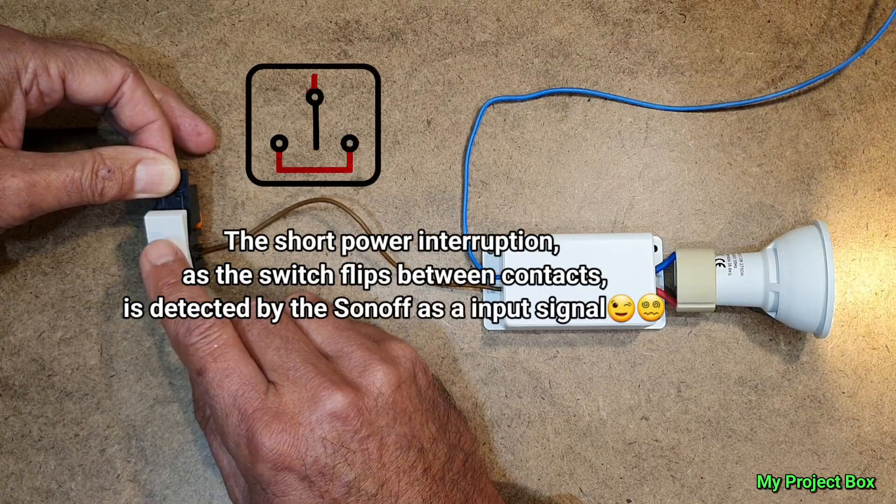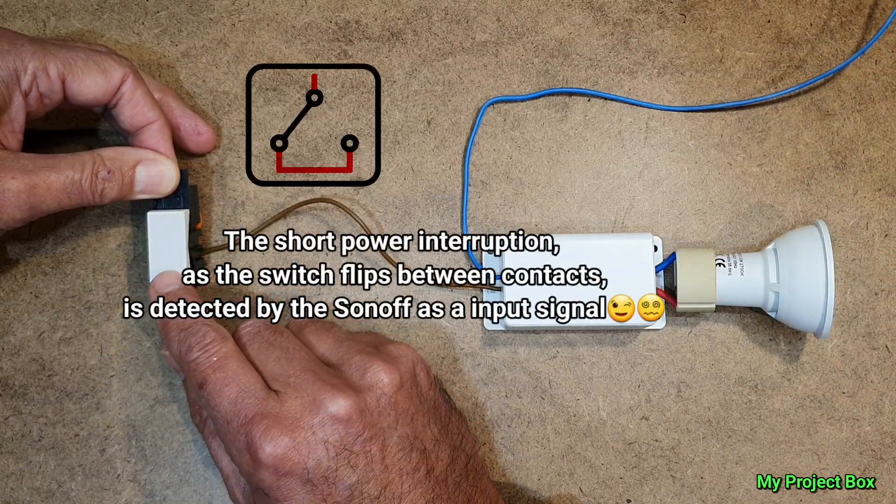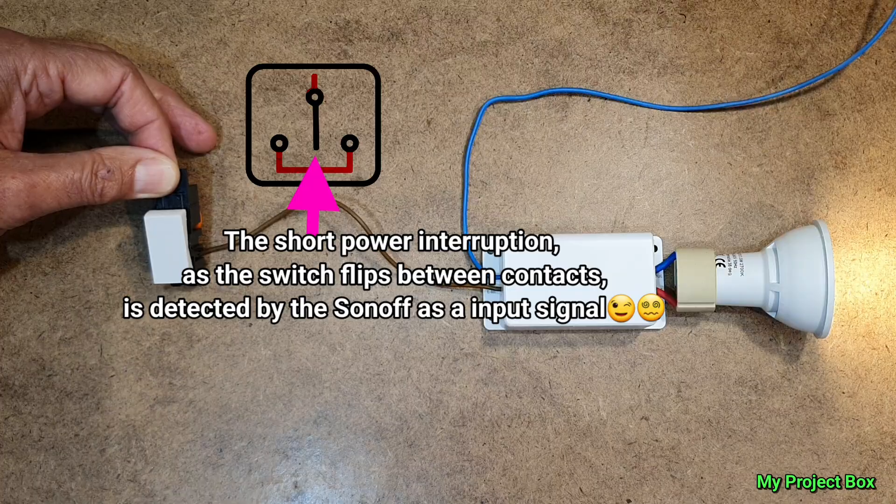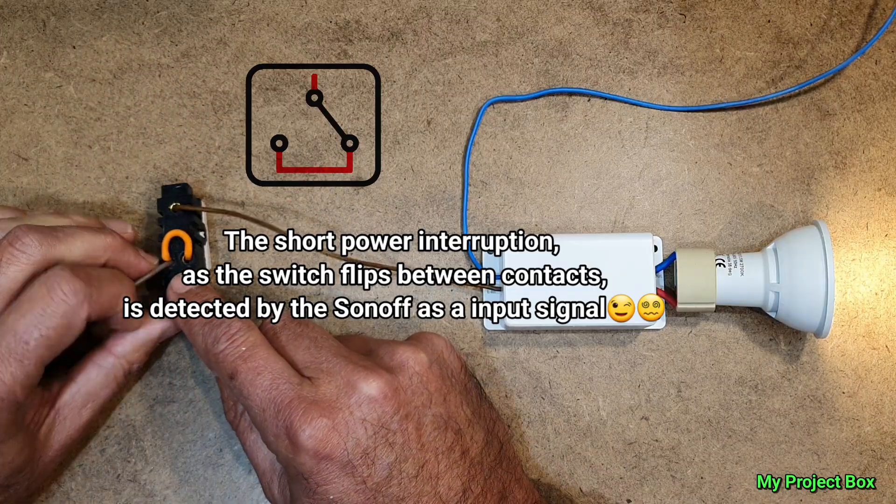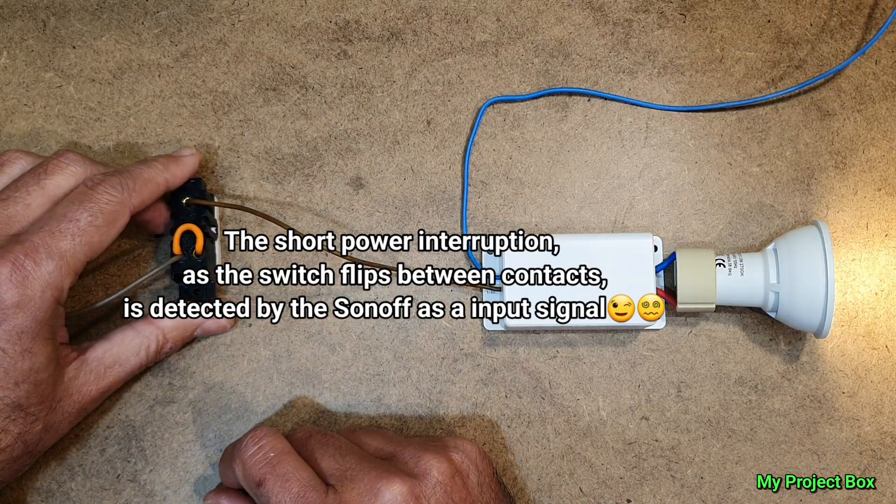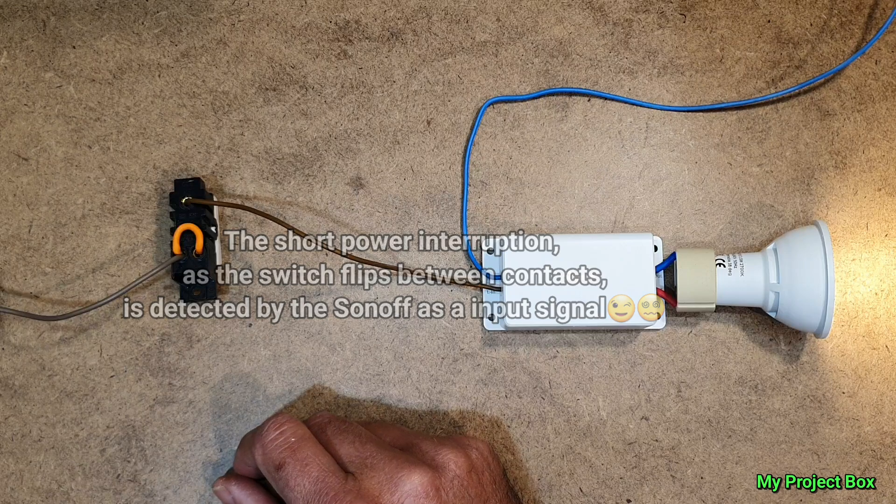That then allows you to permanently power the Sonoff Basic, but at the same time you can turn the light on and off. This stays powered all the time, all because of this little link across L1 and L2. Magic Switch is pretty awesome.